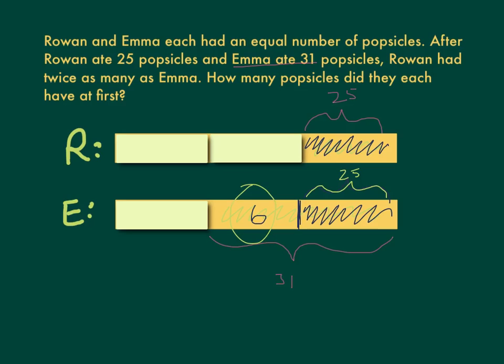So this block here is 6. That tells me this block here is 6, and this block here is 6, and this block here is also 6. With all of these blocks filled in, I can answer the question: how many popsicles did they each have at first?